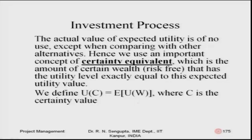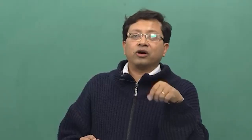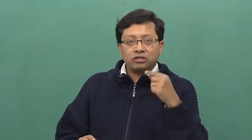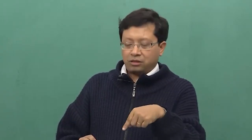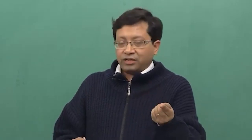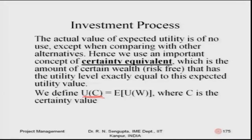On the left-hand side of the certainty equivalent equation, you have U(C), where C is the certainty value. Its probability is one — like tossing a coin with heads on both sides, probability is one, so it simply becomes U(C). On the right-hand side, for a gamble or investment, you have the summation of different utilities multiplied by their corresponding probabilities. If there are ten arms, you multiply each utility by its probability and then find the value of C such that U(C) equals that sum — this gives you the certainty equivalent for that decision.